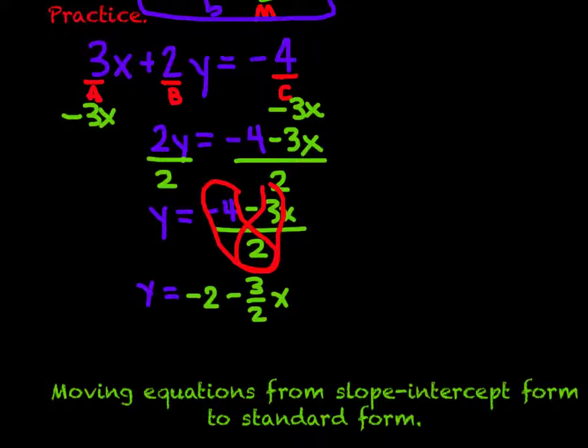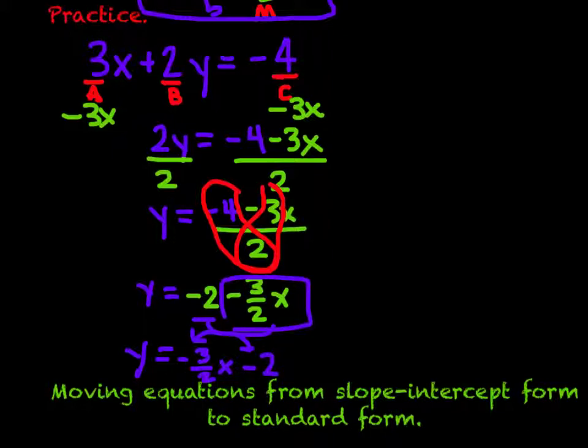Now if I wanted to, I could also take this a step further and actually write it in slope-intercept form, like where it looks like y equals mx plus b. And that means all of this right here in the back is going to move up front. So we get negative 3 over 2x, and minus 2 is going to come into the back. So we get y equals negative 3 over 2x minus 2. So our slope is equal to negative 3 over 2, and my y-intercept is equal to negative 2.